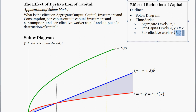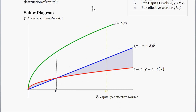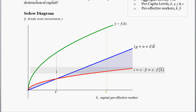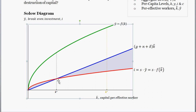So what do we mean by a destruction of capital? Let's look at the Solow diagram. Imagine we are at the steady state level of capital per effective worker — exactly at the K-star level, where investment equals the breakeven investment line. So from one period to the next, the level of capital per effective worker is constant.